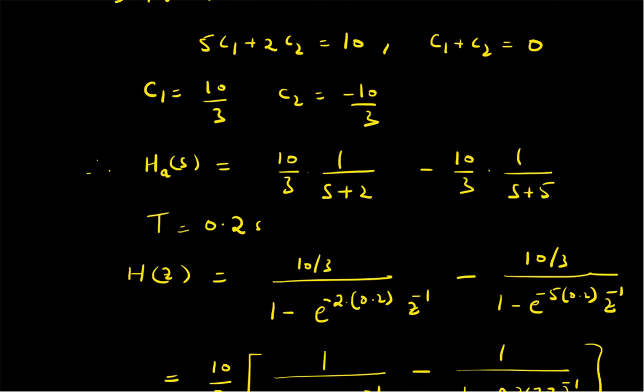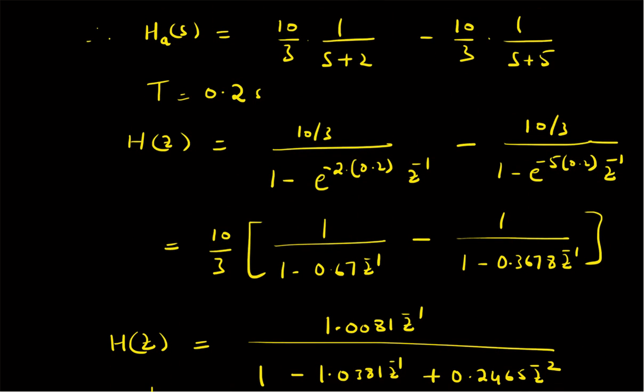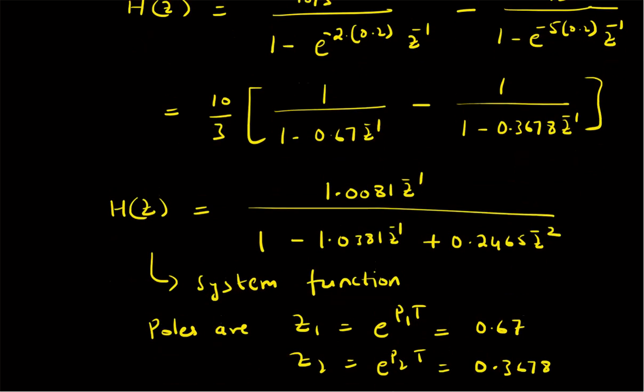With T = 0.2 seconds, H(z) = (10/3)/(1 - e^(-0.4)·z⁻¹) - (10/3)/(1 - e^(-1)·z⁻¹), which simplifies to H(z) = 1.0081·z⁻¹ / (1 - 1.0081·z⁻¹ + 0.2465·z⁻²). The poles at z = 0.67 and z = 0.3678 are both inside the unit circle. Thus we have successfully converted the analog filter into a digital IIR filter using the impulse invariance method.